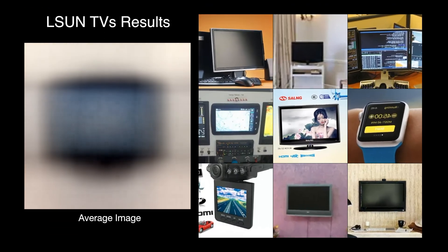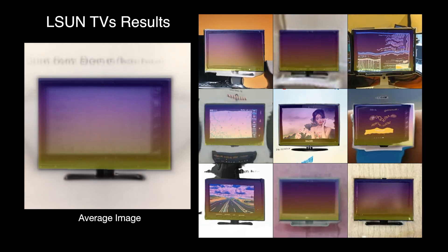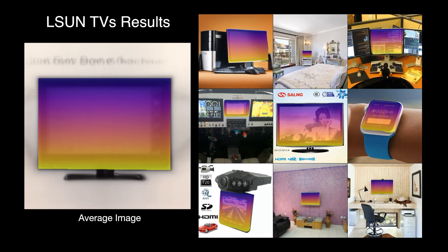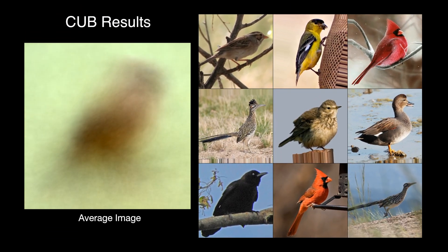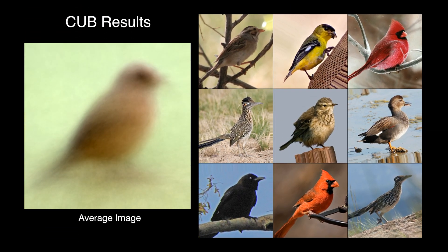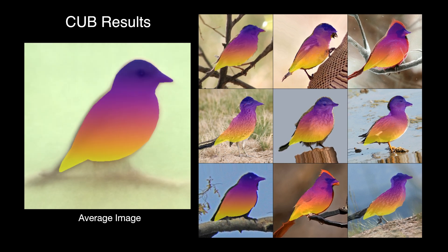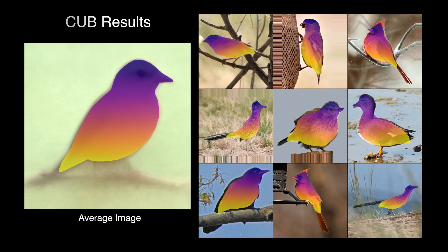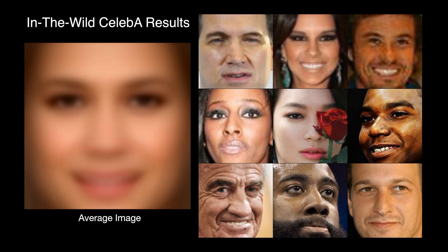Next up is ELSEN TVs. GANGEALING handles different types of monitors, even those that are different from the template image, correctly localizes small objects, and accurately accounts for some out-of-plane rotation. For CUB, GANGEALING works well for birds with different morphologies and orientations. And for in-the-wild CelebA, our method learns accurate dense correspondences for faces.